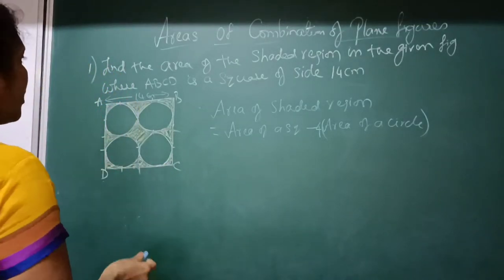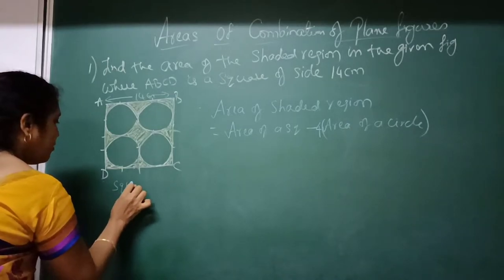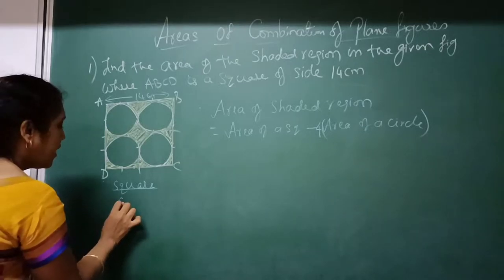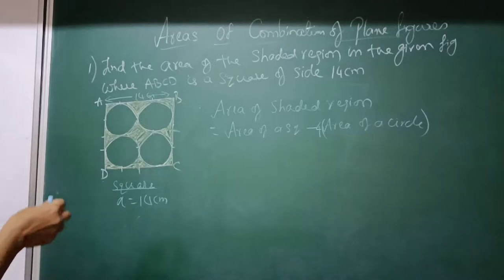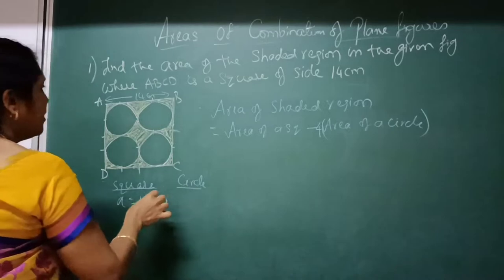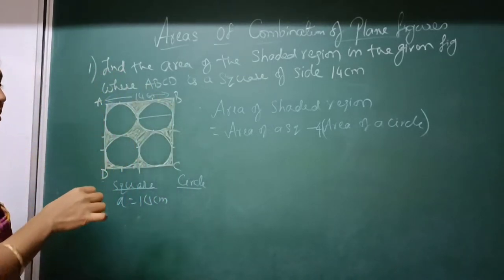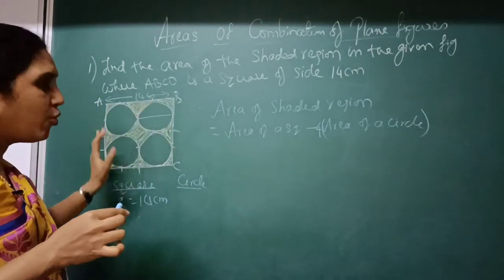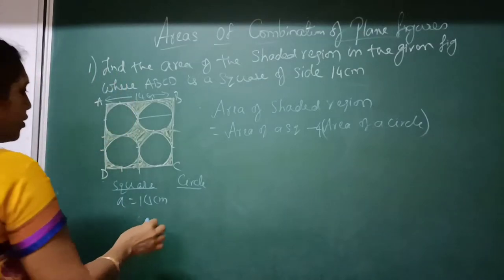Now let me write down the data. They have given a square, they have given the side A is equal to 14 cm. Then for the circle, see what will be the diameter of the circle here? Because the whole square is divided into 4 equal circles, so the diameter of one circle will be equal to 14 by 2.